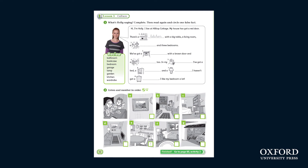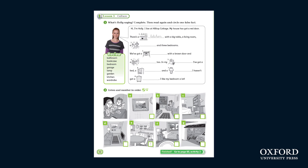The second activity further develops listening skills. Here's a tip: start by asking the children to tell you what is in each picture. This will help them spot the key words when they're listening.